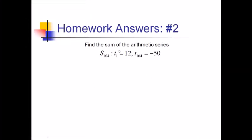For number two, we want the sum of this arithmetic series. So we've got our formula, n times T1 plus Tn over 2. N in this case is the number of terms, 104. T1 is 12. Tn is negative 50. So let's plug all those in, and we'll use our calculator for this one.